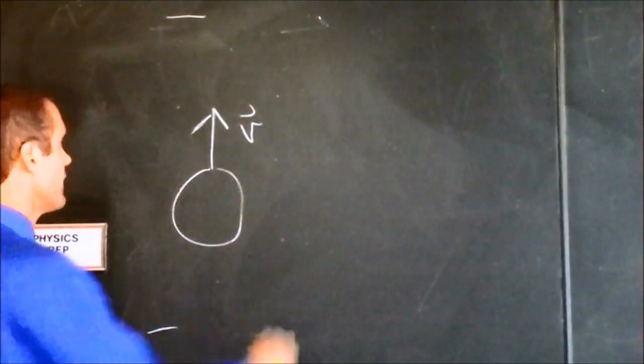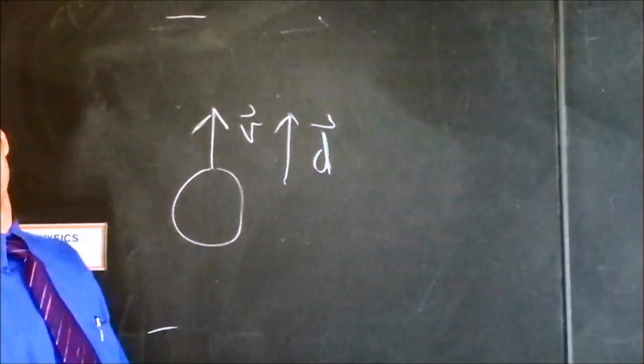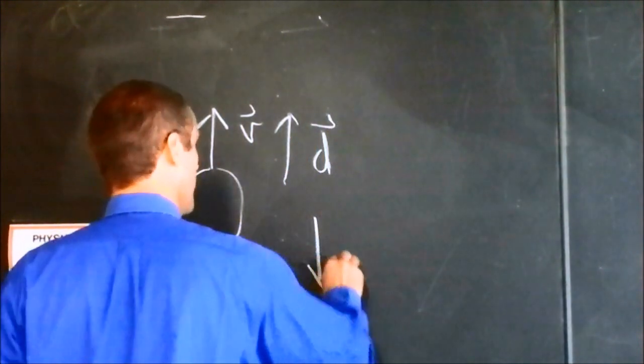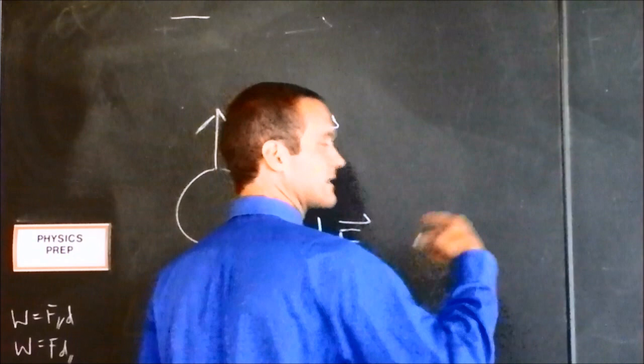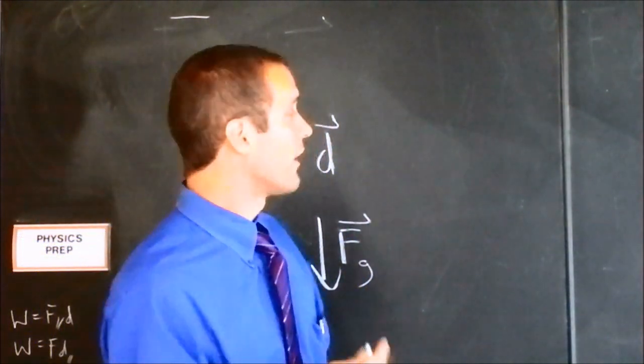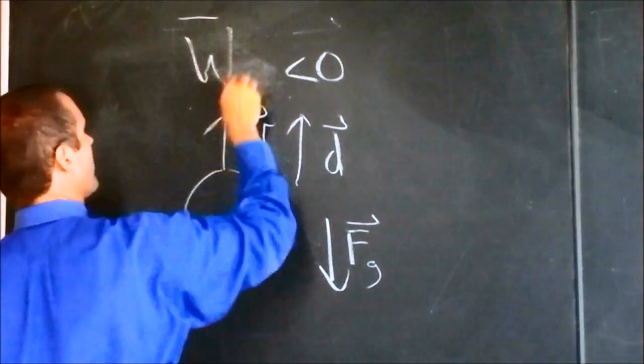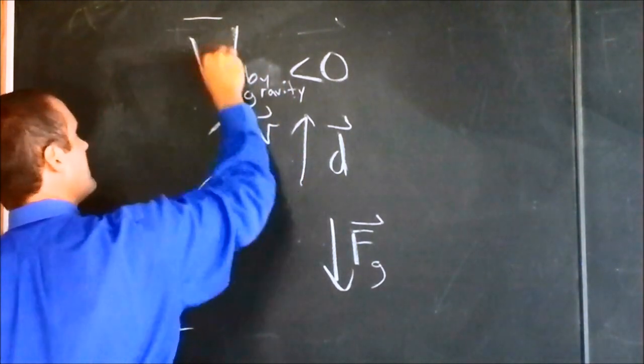If I have a bowling ball, and I throw it up and catch it, there's a whole bunch of interesting stuff that's happening with work in the process. Let me first consider the bowling ball on its way up. That's its velocity. So the distance that it travels on the way up is upward. What direction is the net force on the bowling ball? The net force on the bowling ball is downward. So work by gravity, as the bowling ball goes up, is negative.